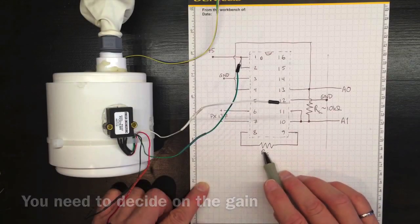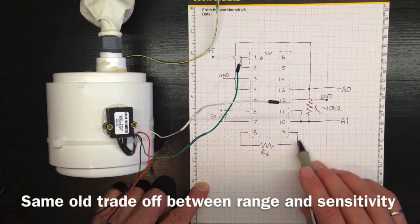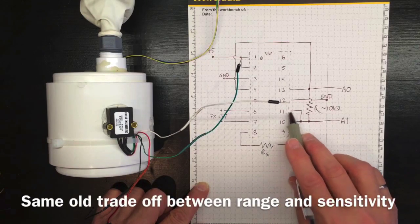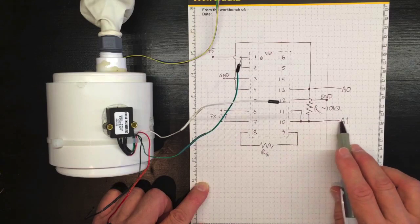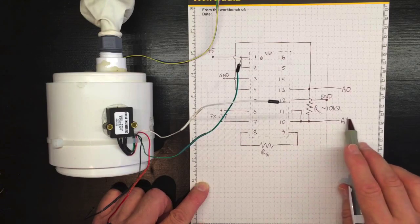After we've figured out what the gain resistance ought to be so that we get an appropriate gain, we'll be able to get the output on pins 10 and 11. Pins 10 and 11 need to be connected together, and they'll go off to pin A1 on the Arduino.